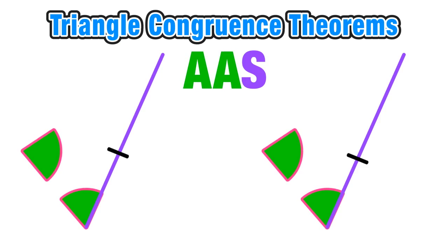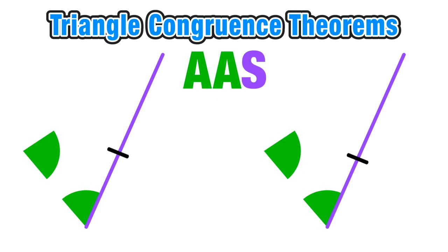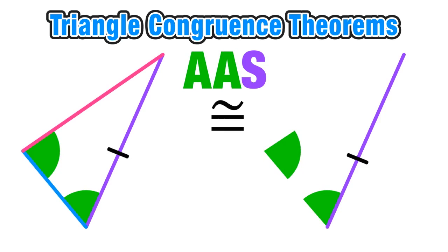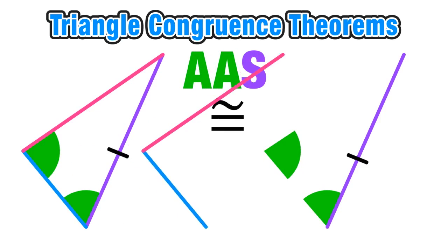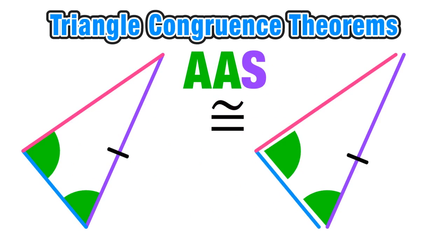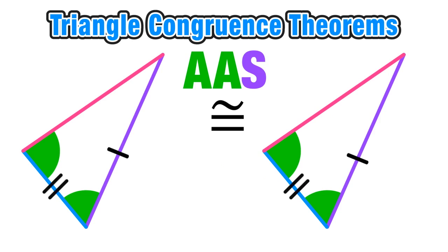So you have two angles in a row and then a side next to them. By completing this triangle we can see why the angle-angle-side theorem proves that two triangles are congruent.